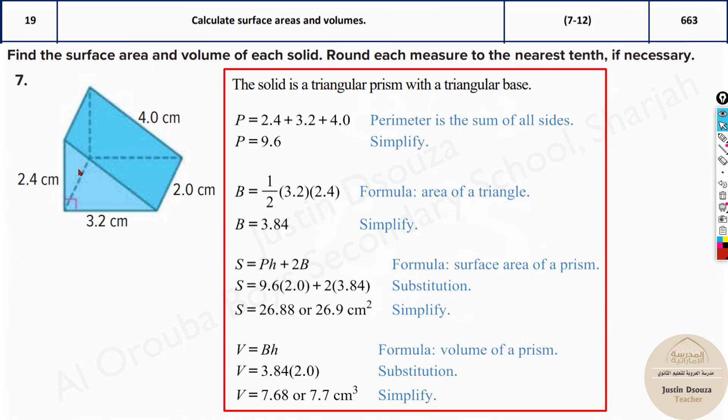Now here, what we need to do is find the perimeter, because the perimeter is required in the surface area. Now which perimeter? Is it of the square, rectangle, or which side? It's the rectangular side. So you need to add this height, base, and the slant height which is given as 4. So add these three dimensions: 2.4 plus 4 and 3.2. And that's how you get the perimeter.